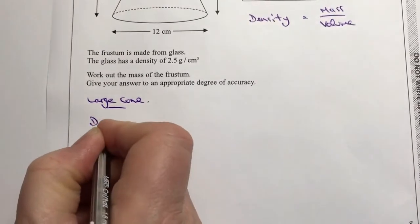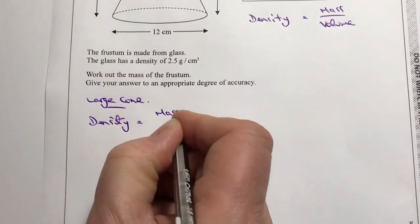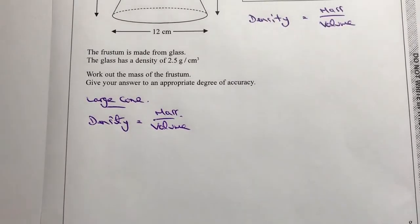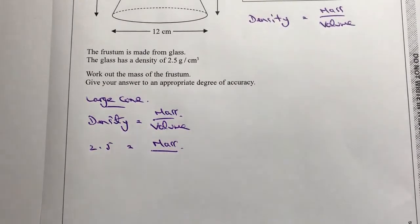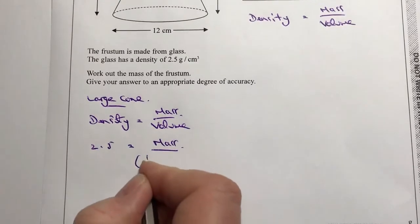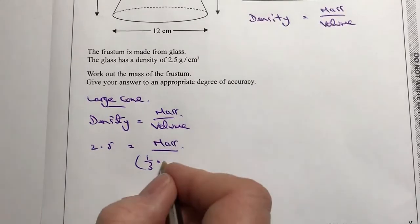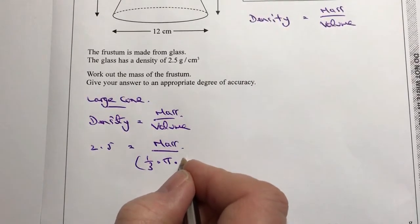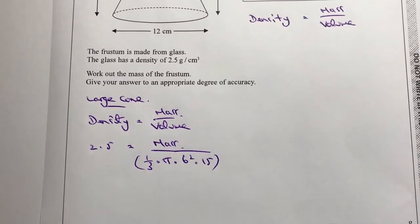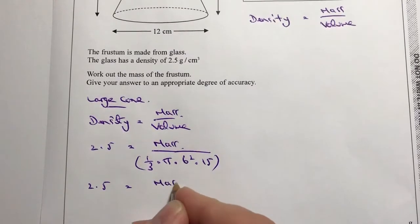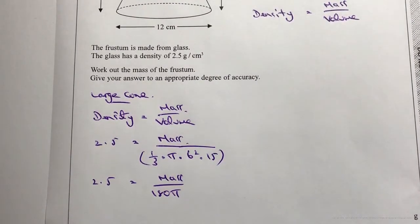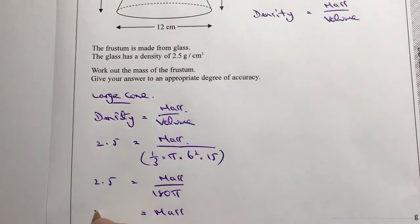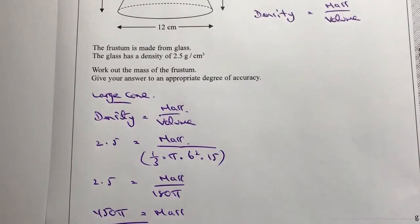Let's look at the large cone first. Setting up density = mass / volume: density is 2.5, and the volume using the formula is ⅓ × π × 6² × 15. My calculator gives me 180π. Cross-multiplying, for the large cone: mass = 2.5 × 180π = 450π.